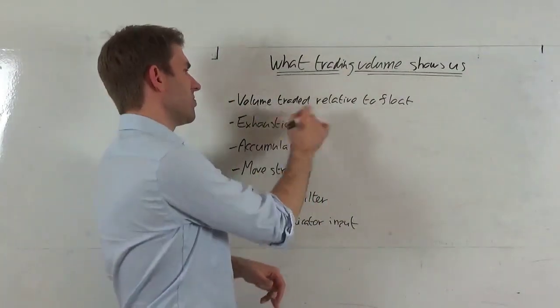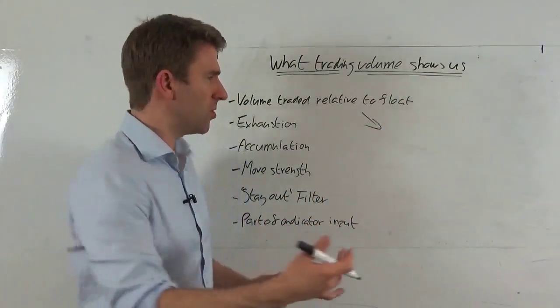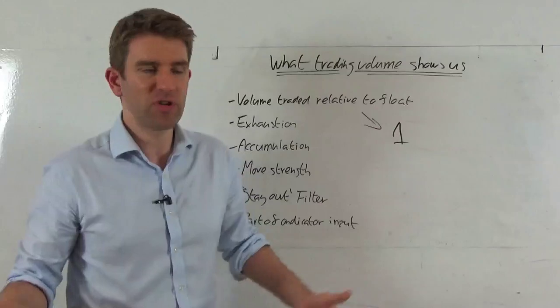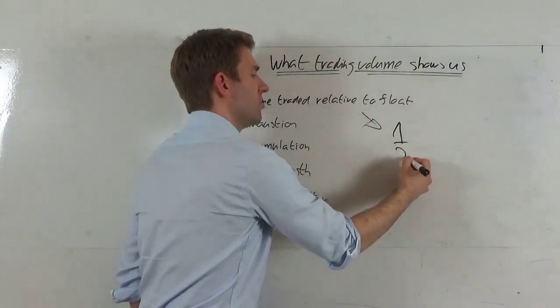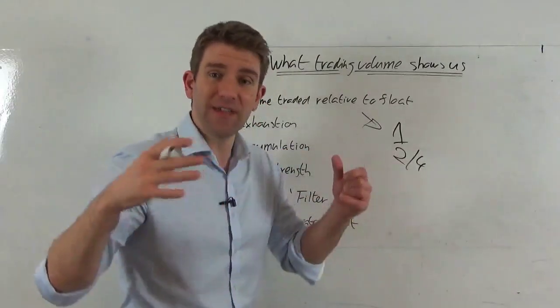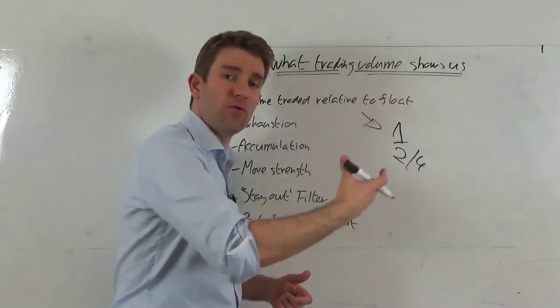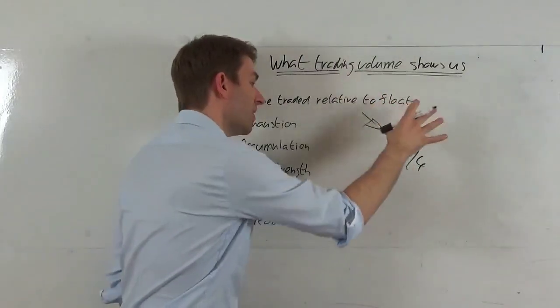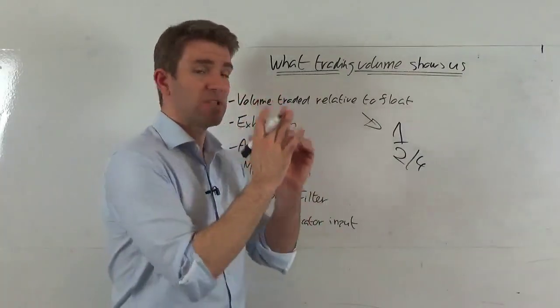You can actually use volume to see what is the normal participation. Let's say you do one million shares a day, for example, and then you're watching a trading day sometime in the future and all of a sudden you're doing two million or four million a day. That gives you an idea that this thing now is of interest to a lot of people. The average volume is one, now we're doing twice or four times the average volume. This is worth watching.